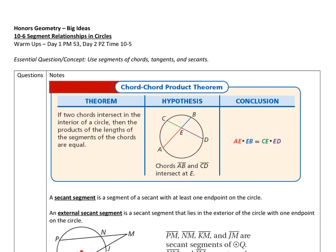Here is the first example: if two chords intersect in the interior of a circle, then the products of the lengths of the segments of the chords are equal. So if I have two chords intersecting, A to E times E to B will equal E to C times E to D — this times this equals this times that. It's technically a ratio of AE to ED equals CE to EB, but we cross-multiply, and it's much easier to remember it this way.